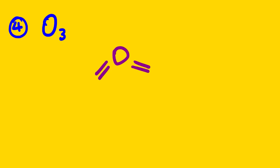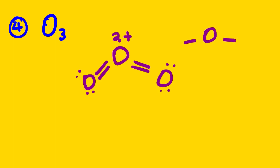Now looking at O3, we can see it doesn't have any plus or minus charge — it's not a polyatomic ion. We just have oxygen bonded with other oxygens. Now we cannot simply draw it in a certain way. The reason is: if oxygen bonds two times it has two lone pairs and the formal charge is zero. When it bonds once, the formal charge is negative one.